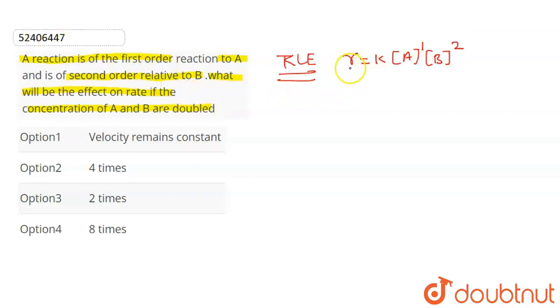Now, we have the initial concentration A and B, which will double the rate. So, the rate will be affected. We have written R is equal to k, concentration of A to the power of 1, and 2B to the power of 2. So, you can write R is equal to k times A to the power of 1.